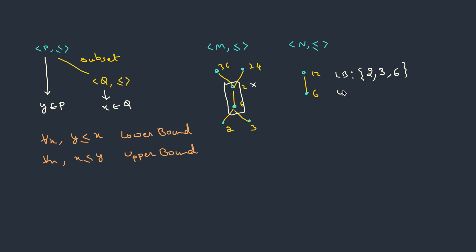On the same lines, for upper bounds: 36 is greater than or equal to 12 as well as 6, so 36 can be included. Even 24 is greater than or equal to all the elements. How about 12? 12 is greater than or equal to itself and greater than or equal to 6, so 12 is also included. So these are the lower bounds and these are the upper bounds. Anything which falls below the subset will be into the lower bounds, and if it has a least element, that will be included too. For upper bounds, anything which falls above the subset will be taken, and if it has a greatest element, that can be included as well.